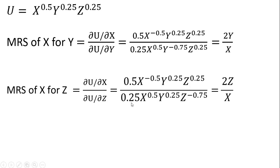Once again, 0.5 divided by 0.25 is 2. The y terms cancel. The x to the minus 0.5 gets brought down into the denominator, so in the denominator we now have x to the 0.5 times x to the 0.5, and that's just x. Likewise with the z term, we move it up into the numerator, so in the numerator we have z raised to the 0.25 times z raised to the 0.75. Adding the exponents, we get z. So that is our result.